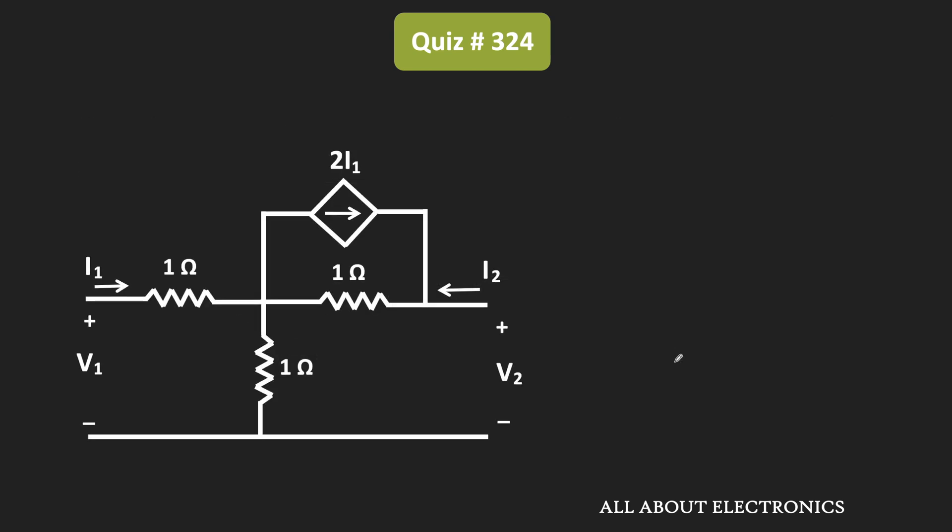So if you are aware, these H parameters can be given by these expressions. And the parameter H11 is the ratio of the input voltage V1 and the input current I1 whenever the output voltage V2 is equal to 0. So to find the parameter H11, we will consider this voltage V2 as 0 and we will find the ratio of V1 and I1.